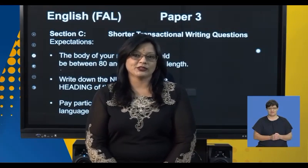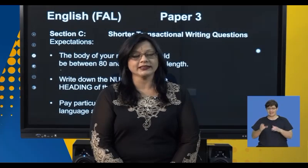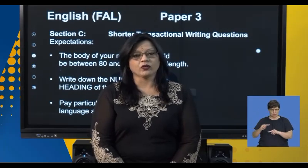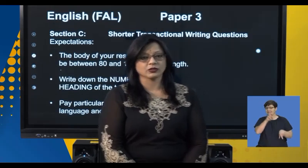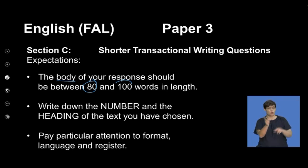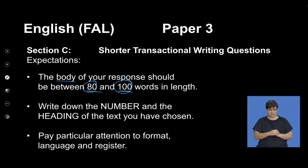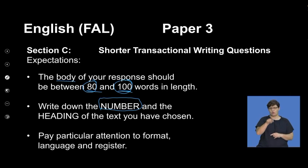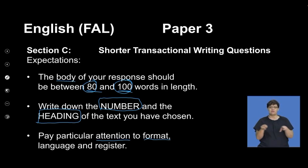Now we're going to look at section C, which is your shorter transactional writing. The expectations: the body of your response needs to be 80 to 100 words in length — that's your minimum and maximum. Write down the number again. You will have a choice of questions — either 3.1, 3.2, or 3.3. Remember the heading — I would prefer you write it in your plans. Remember, attention to format, language, and register is very important. These are instructions taken from your question paper.